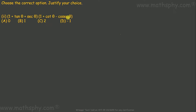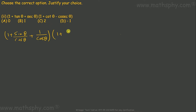Let's change all of these — tan, sec, cot, and csc — into sine and cos. So I have: 1 plus tanθ becomes sinθ over cosθ, secθ becomes 1 over cosθ, cotθ becomes cosθ over sinθ, and cscθ becomes 1 over sinθ.